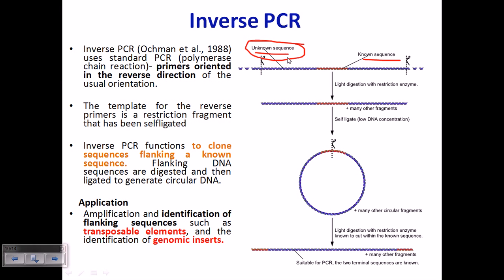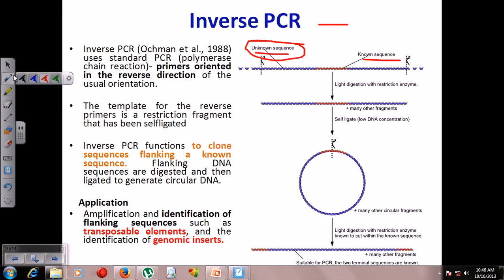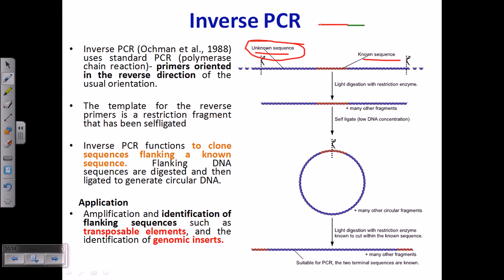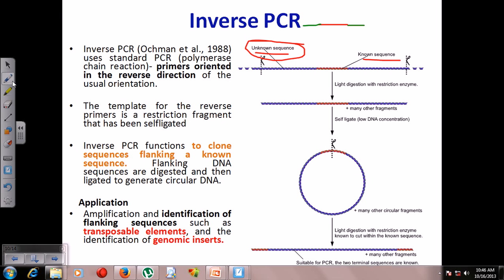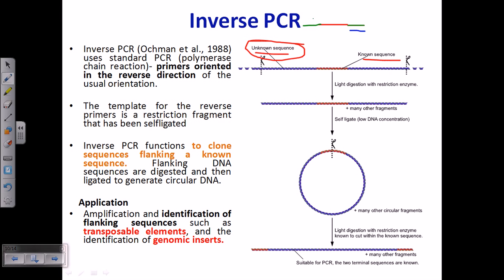We can amplify an unknown sequence, but we must have a known sequence right behind it. In this case, the known sequence is at the middle — we can add primers for this known sequence, but we cannot design primers for the unknown sequence. For amplification of an unknown segment, we must have the known sequence added at both terminal regions. But here, the total opposite is happening: at the middle we have known, and at the terminal regions we have unknown.